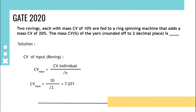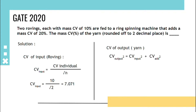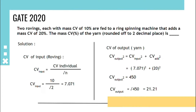We get the CV of input as 7.071. And the output CV of the yarn: output CV squared equals input CV squared plus added CV squared. Substituting: 7.071 squared plus 20 squared, we get CV output squared as 450, and CV output is root of 450, which becomes 21.21.